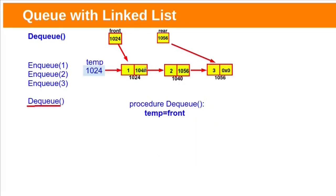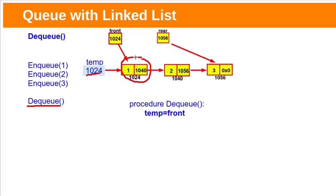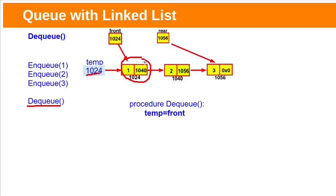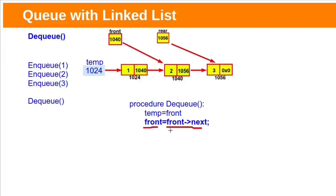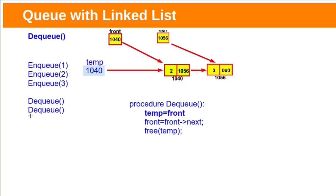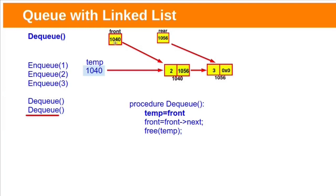We want to perform dequeue operation. It should remove the node at front. This can be simply done by advancing the front pointer in the forward direction. But we created memory for all these linked list nodes dynamically, so for the first node we need to free that memory to avoid memory leaks. Before advancing the front pointer, store its contents in a temp pointer. This temp pointer will be used to free the memory. Then advance the front pointer by storing front's next contents in the front pointer. Now front next is 1040, so 1040 will be copied to front, and front will be pointing to this second node. Now delete this first node with the help of this temp pointer using the free function. The same process will be repeated for the next dequeue — store front in temp, then advance front, then delete temp.